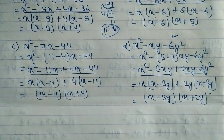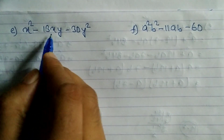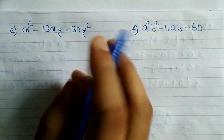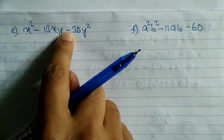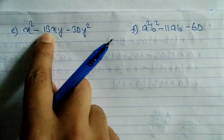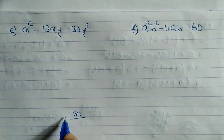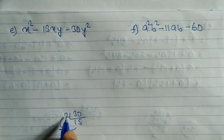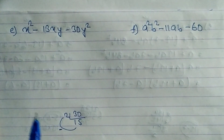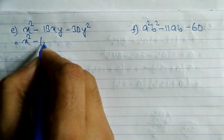Now look at problem e: x² - 13xy - 30y². While multiplying we need 30, and while subtracting we need 13. Trying 2 and 15: 15 minus 2 equals 13, and 15 into 2 equals 30. We got it in one step!